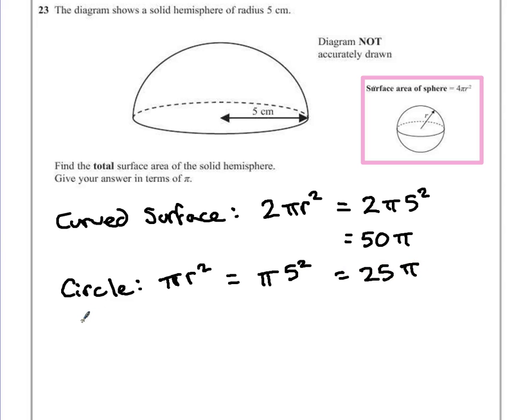So the total surface area is just 50π add 25π, which is 75 times π for the hemisphere.